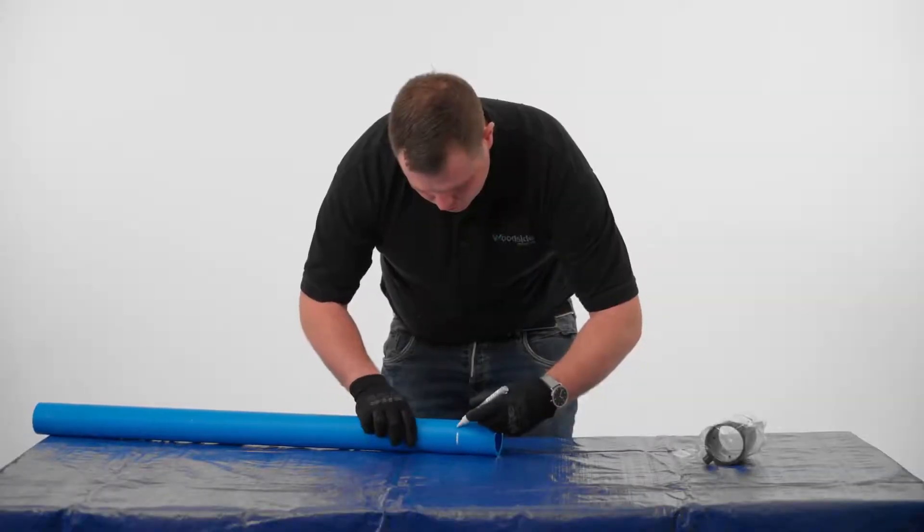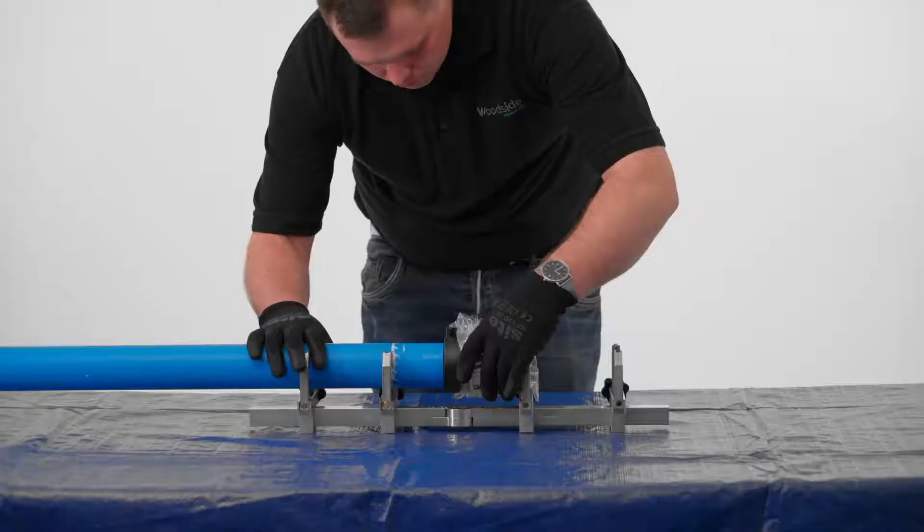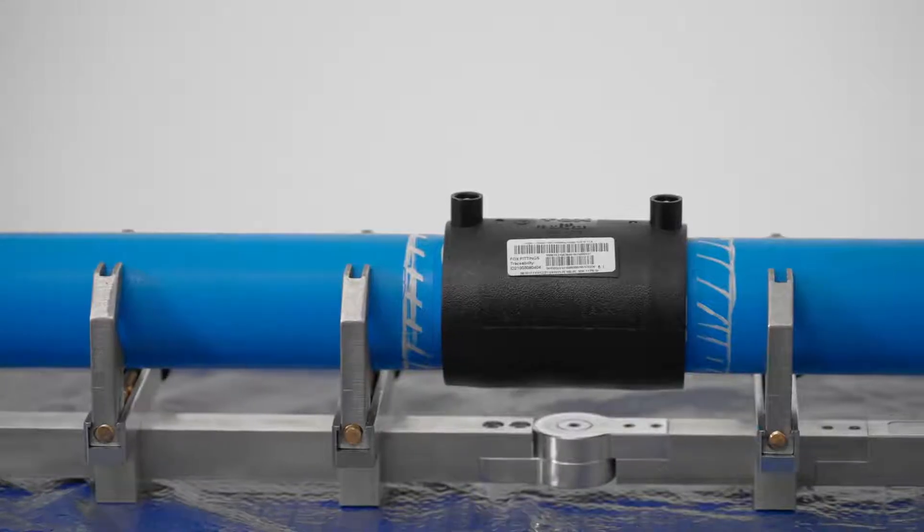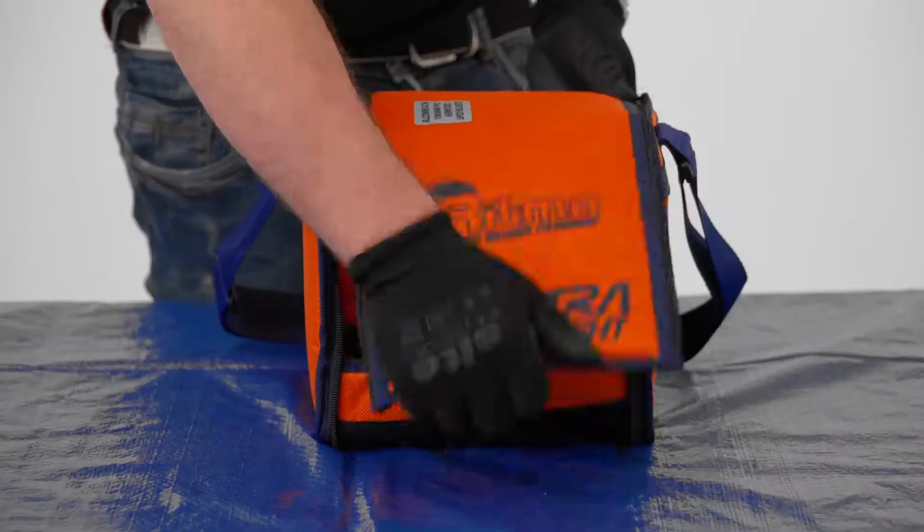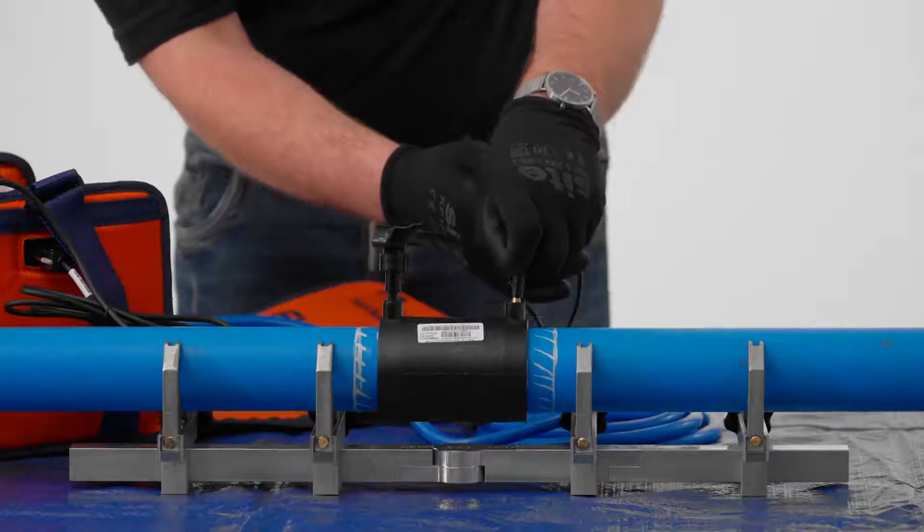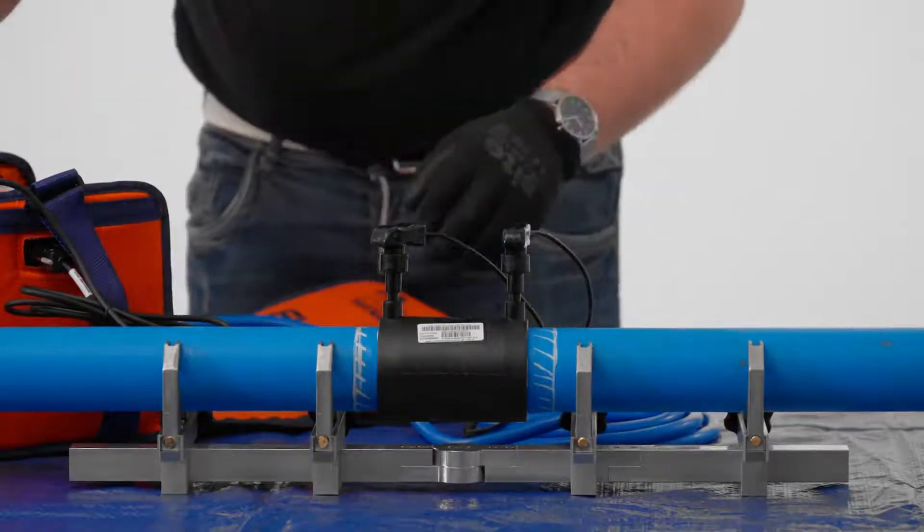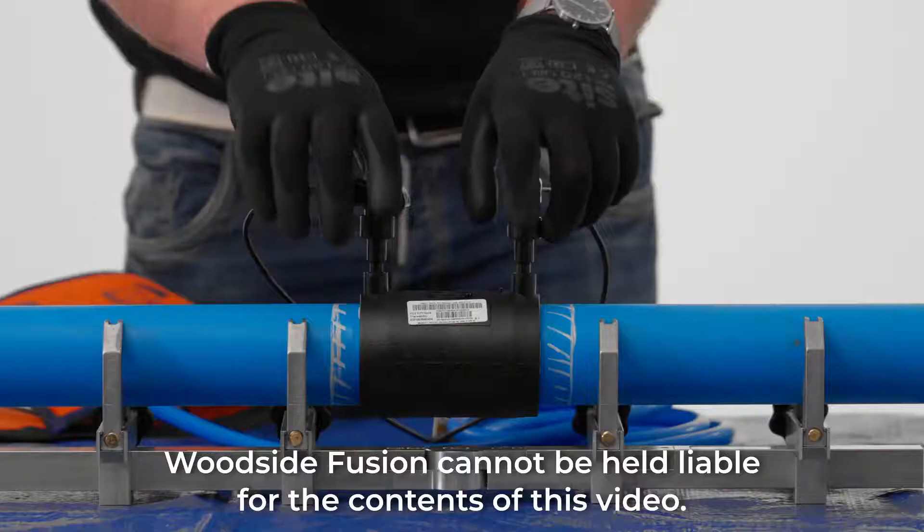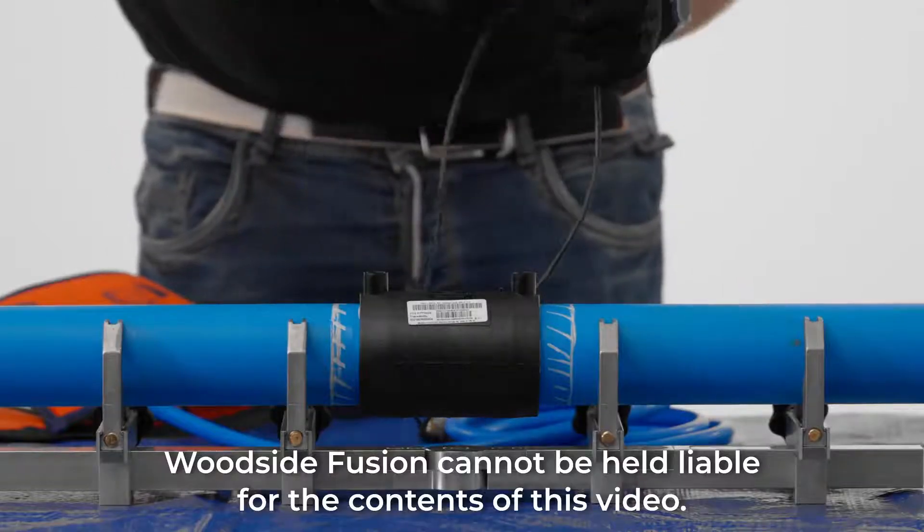Electrofusion welding is a method of jointing polyethylene pipes using fittings with in-built heating elements. This video does not replace the need for formal training, but instead is to offer some practical best practice advice to ensure you achieve a successful long-lasting weld.